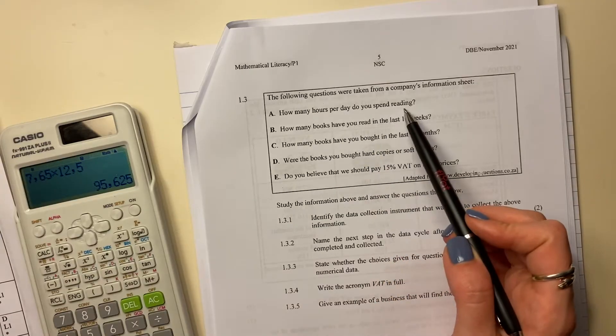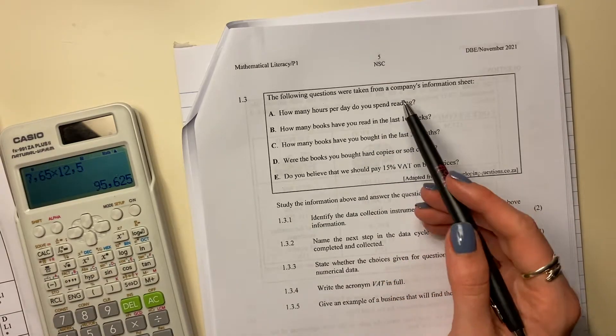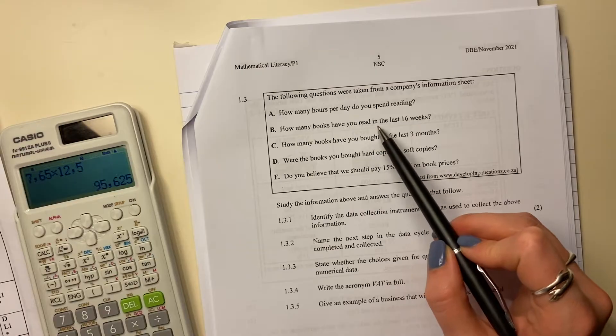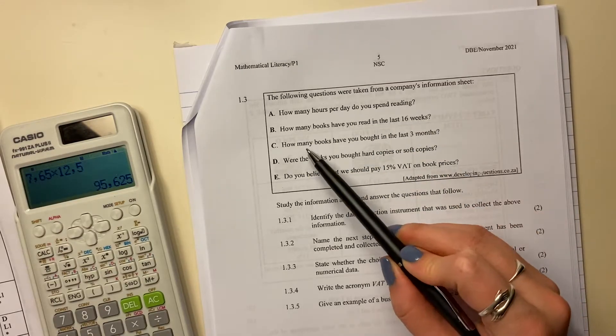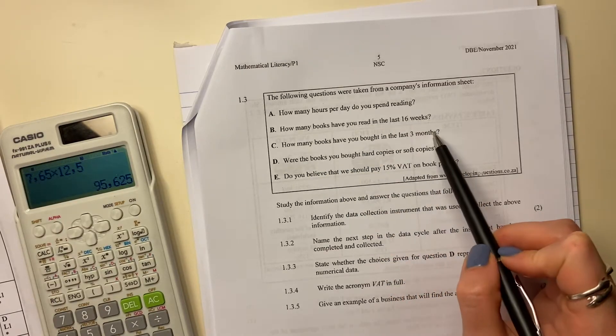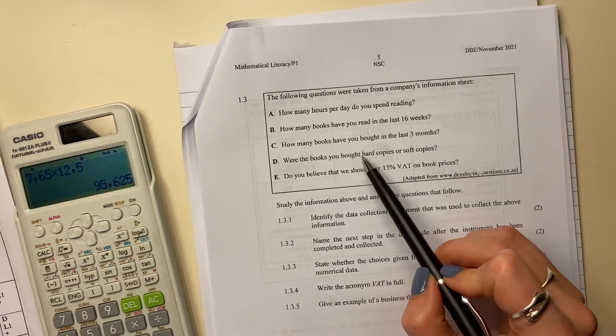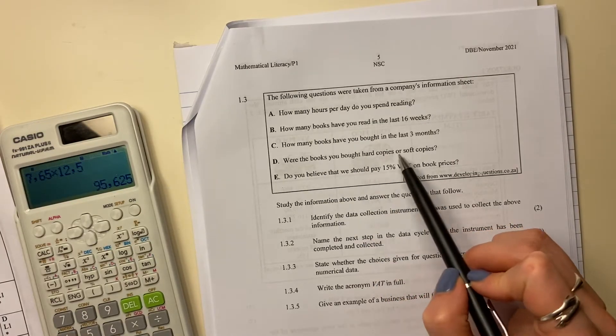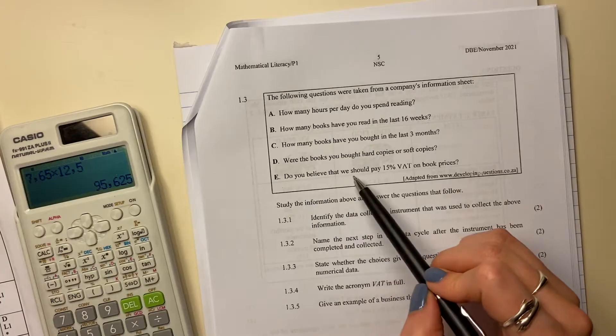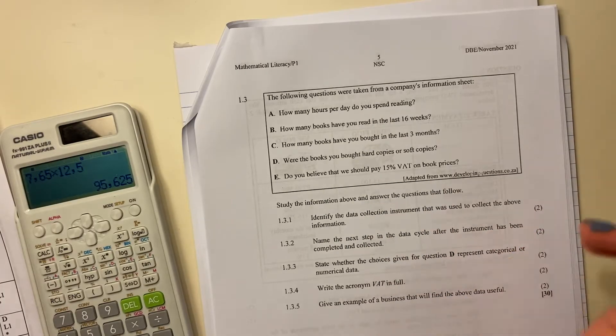So how many hours per day do you spend reading? Not as many as I would like, I must be honest with you. How many books have you read in the last 16 weeks? How many books have you bought in the last three months? Were the books you bought hard copies or soft copies? Do you believe that we should pay 15% VAT on book prices?